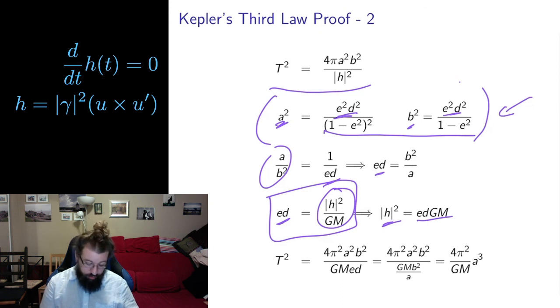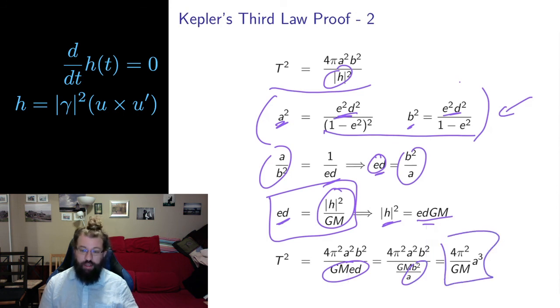And now I'm going to replace a bunch of things. First, I'm going to replace |h|² with this, so I'm going to put that here. And then I'm going to replace ed with b²/a, put that here, and cancel things off. And what I get out of it is exactly 4π²/gM times a³. And this is precisely the relationship that I wanted. T² is some constant times a³. And that constant depends on capital M, so it depends on the mass of the central object, but it doesn't depend on any of the other geometry. It doesn't depend on the little mass. It doesn't depend on the initial conditions. 4 and π and the gravitational constant g are completely independent of the rest of the situation. And that's Kepler's third law.